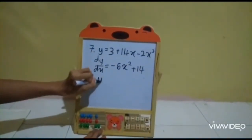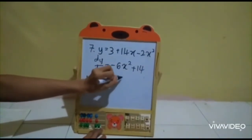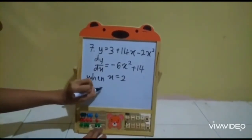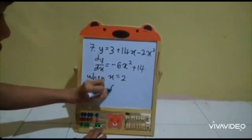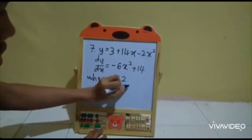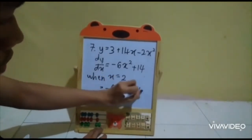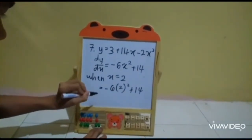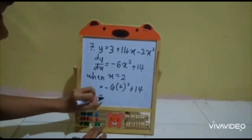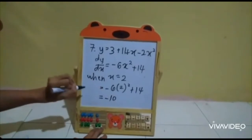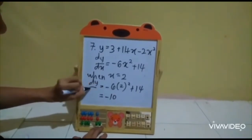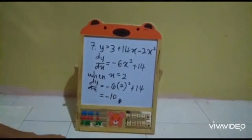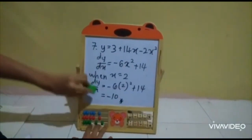When x = 4, we substitute into dy/dx = -6x² + 14: -6(4²) + 14 = -24 + 14 = -10. So dy/dx = -10. This is the answer for question 7a.